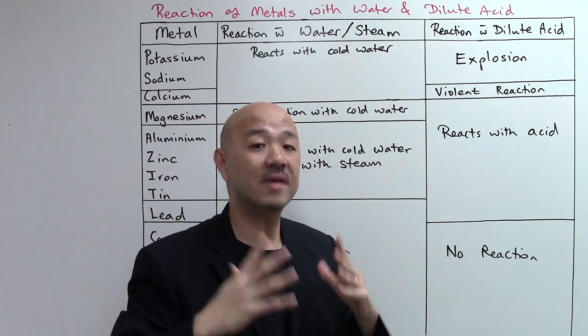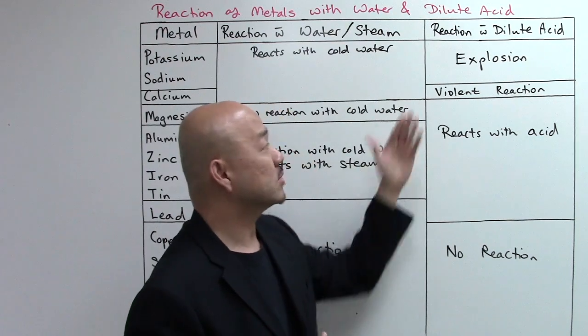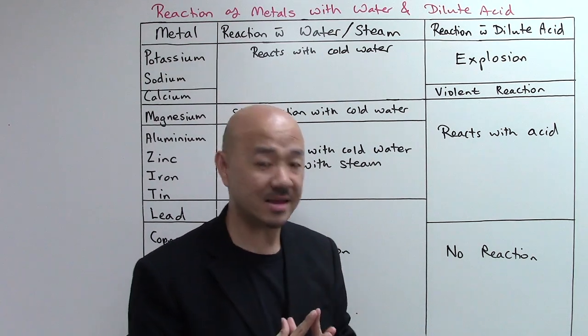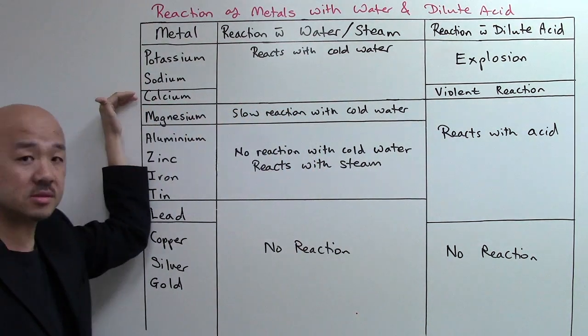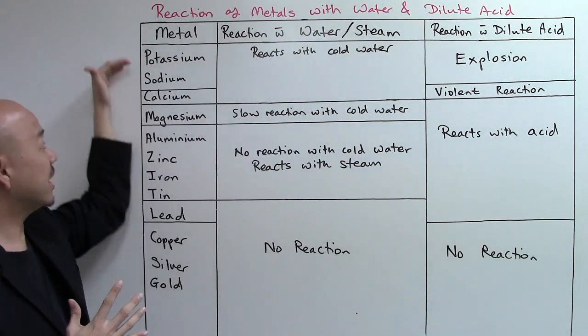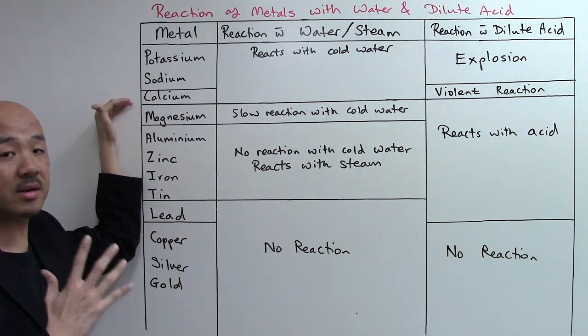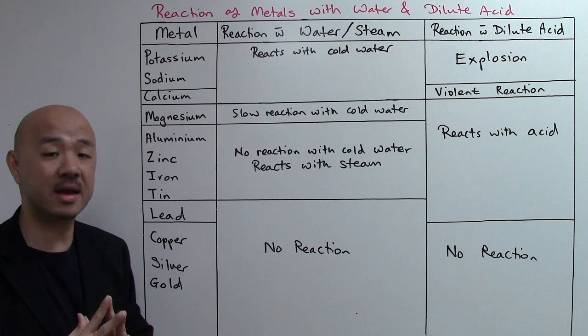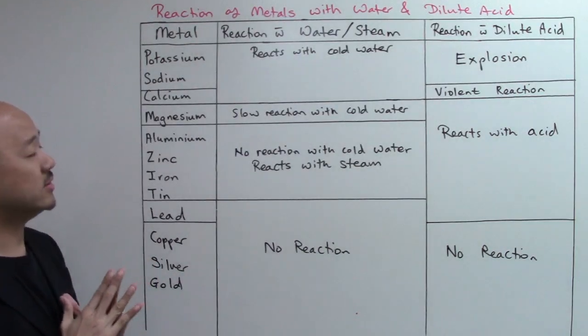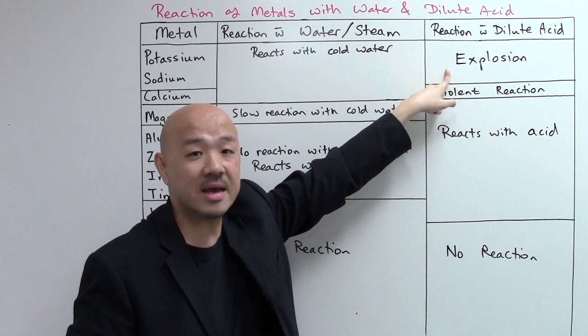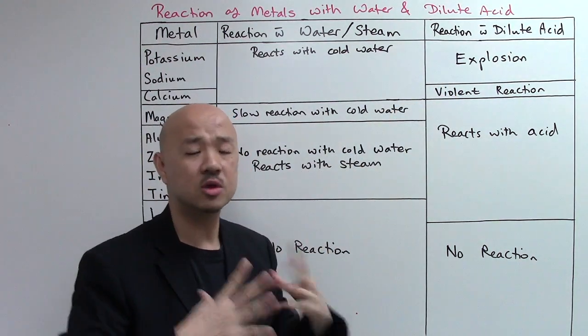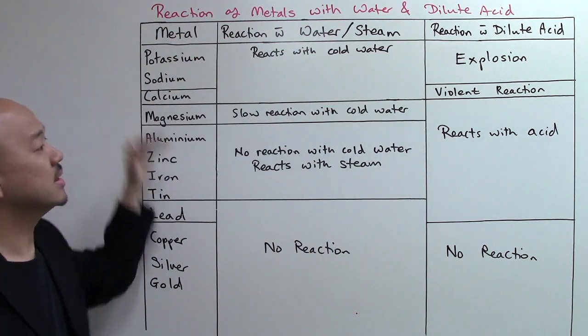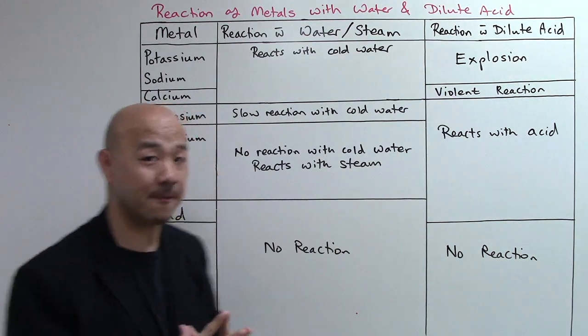I'm going to start with this column first because it's easier. We learned this in the topic of acids, whereby acids react with most metals to give you ionic salt and hydrogen gas. The first three metals are highly reactive and have vigorous reactions with dilute acids. Potassium and sodium are group one metals, alkaline metals, highly reactive, so they tend to explode when you add acid to them - too vigorous, too reactive. Calcium, the third most reactive metal in the series, tends to have a violent reaction with dilute acids.